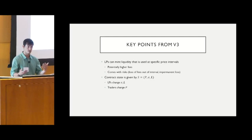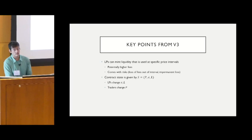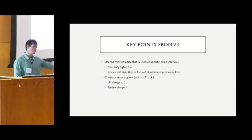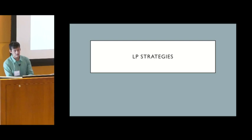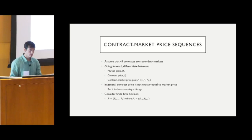The key points to emphasize: in V3, LPs can mint positions in specific price intervals — this is the increased action space we'll be looking at. We also have the notion of state where traders change the price and liquidity providers can change the liquidity component, i.e., where they allocate liquidity and how much is allocated to different buckets.